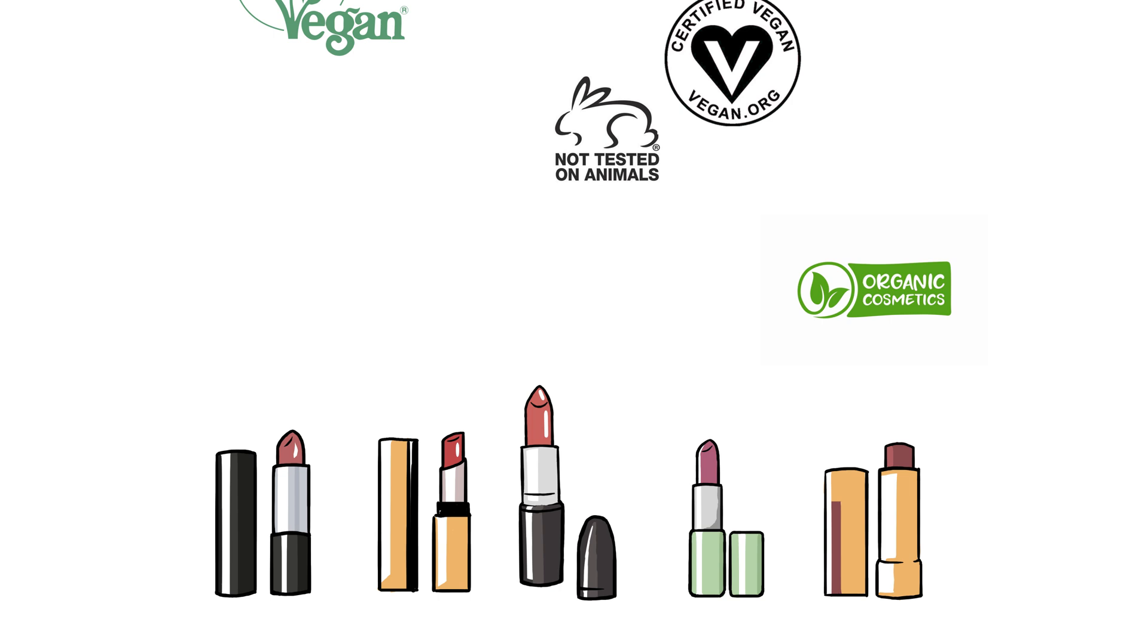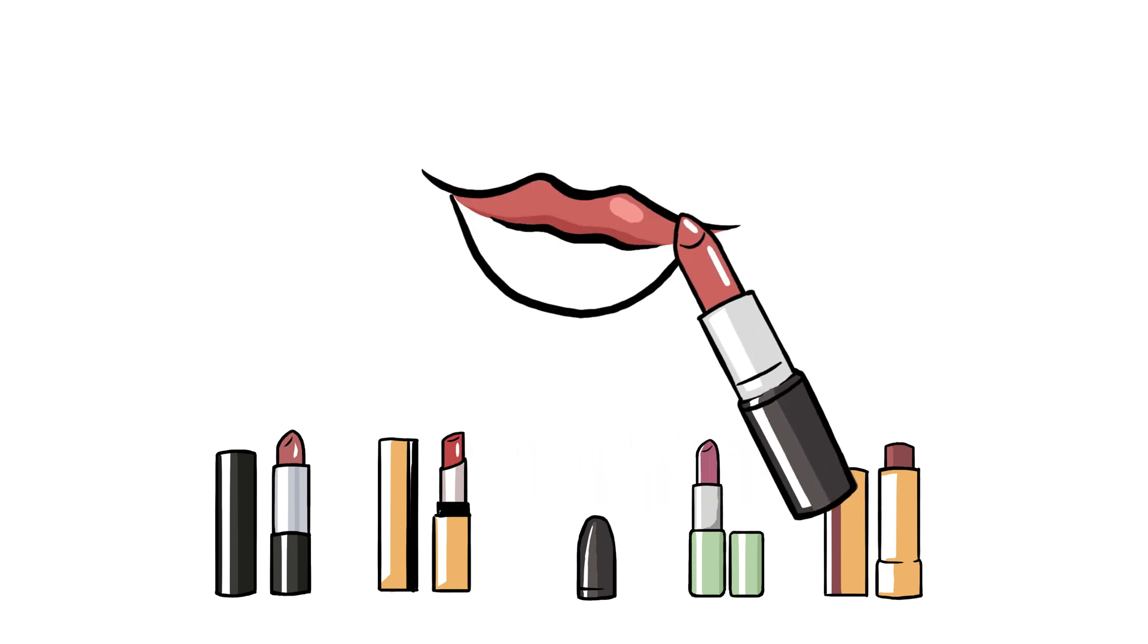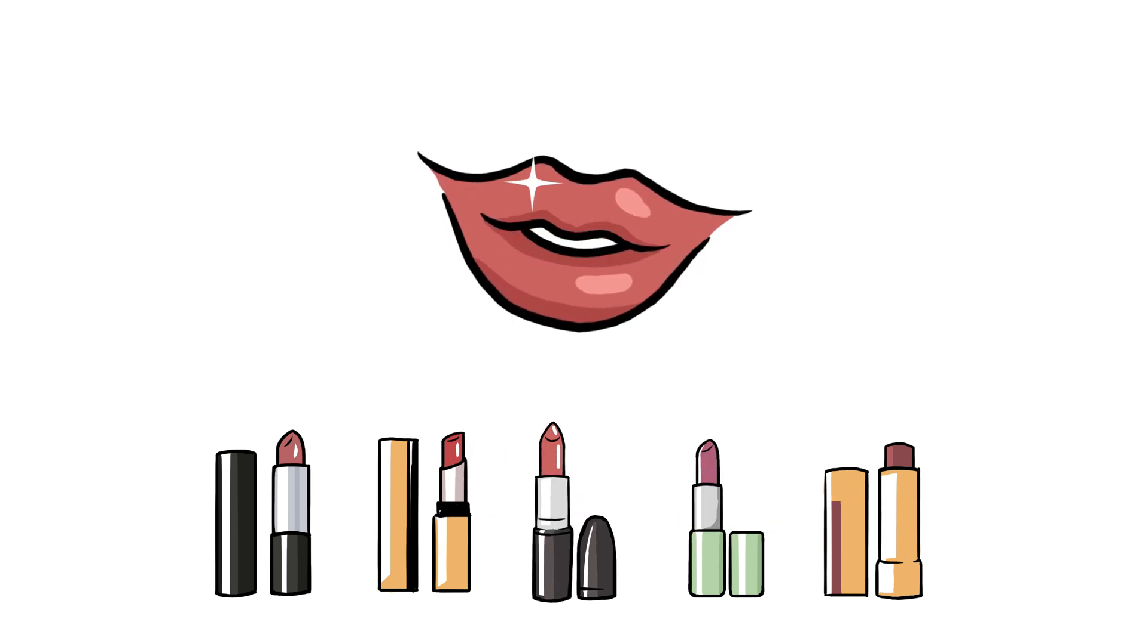You can also check labels to see if they're cruelty-free or eco-conscious. And science keeps improving it, like using silicone to make it smudge-resistant, or using hydrating ingredients so your lips don't dry out.